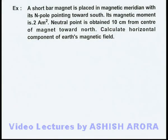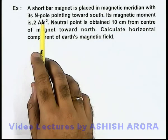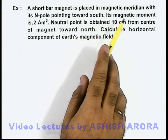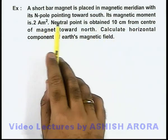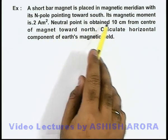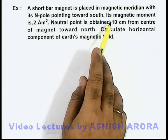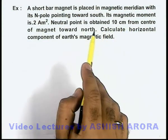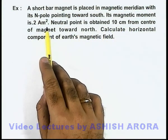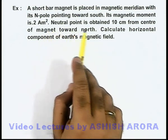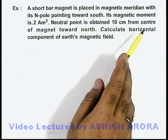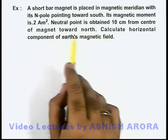In this example, we are given that a short bar magnet is placed in the magnetic meridian with its north pole pointing towards south. Its magnetic moment is 2 ampere meter square and a neutral point is obtained 10 centimeter from the center of the magnet towards north.